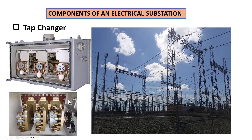So what exactly is a tap changer? The tap changer is basically a device that's used with a power transformer. Its main role is to regulate the voltage ratio on the secondary, regardless of what is happening in the primary. So we may have primary voltage variations, but the tap changer will ensure that the secondary voltage has some regulation — there is no fluctuation.